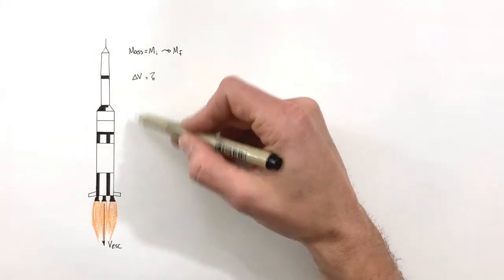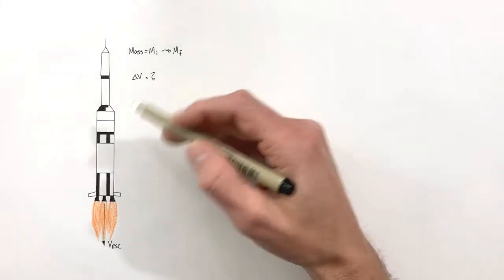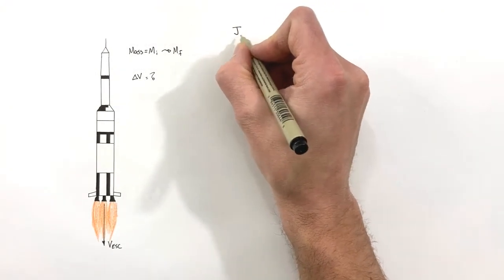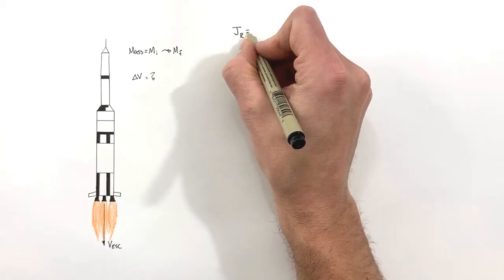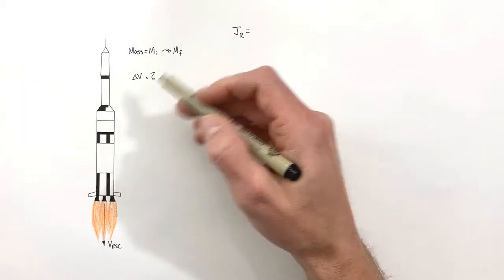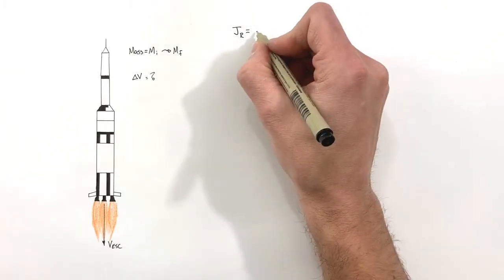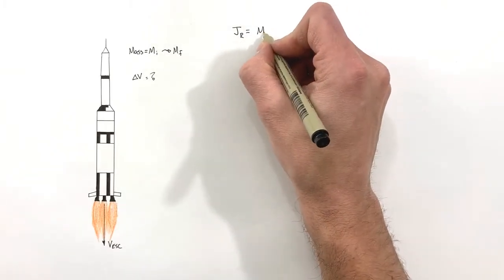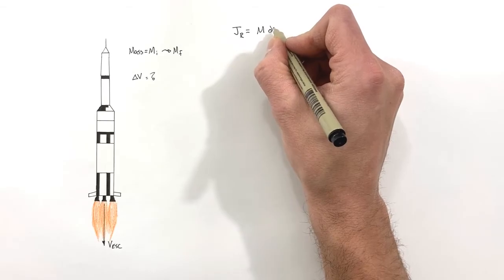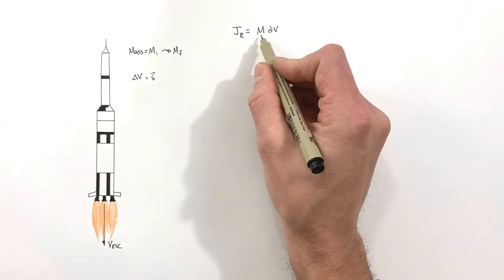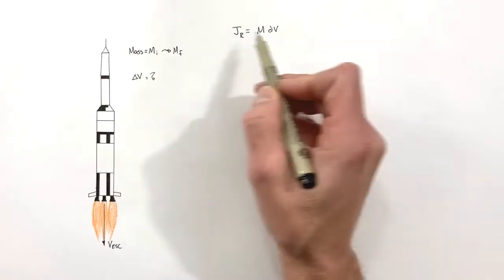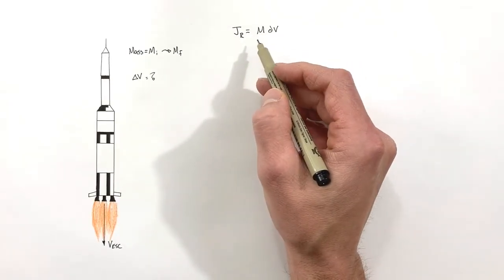First I want to look at the impulse on the rocket itself. From beginning to end, the total impulse on the rocket is going to be the mass of the rocket multiplied by its change in velocity. Understand that this mass is steadily going to be changing from Mi to Mf, and we'll deal with that issue in a minute.